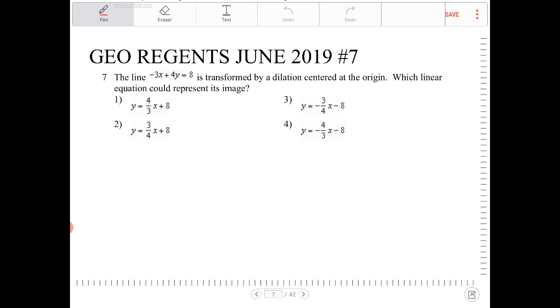Whenever we're dilating a line over any point, the image will always have the same slope as the original line.